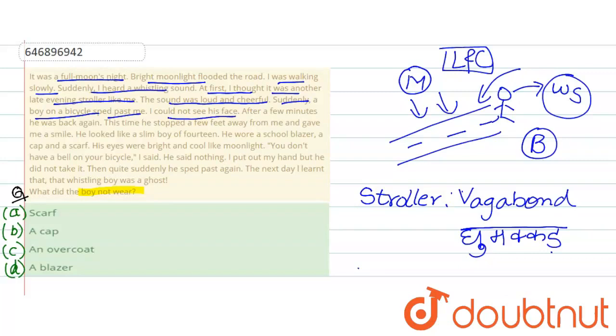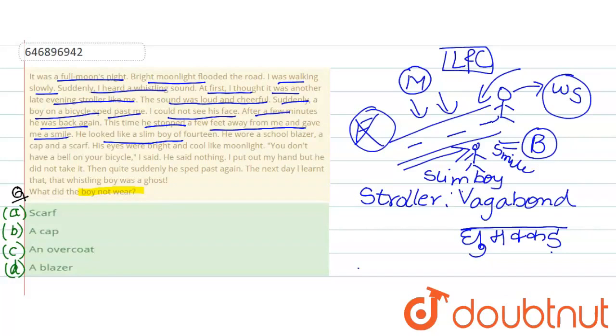I could not see his face. Ladke ka face jo hai woh nahi dekh paaya. After a few minutes he was back again. Woh chala gaya aur kuch samay baad woh phir wapas aaya. This time he stopped a few feet away from me and gave me a smile. Woh kya kar raha hai, lekin is time woh mushkil kuch feet ki doori pe jo hai khada hua. Bicycle usne roki. Woh kya kar raha khade ho, kya usne kya kiya, smile karta hai woh.